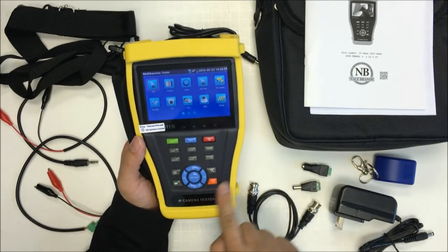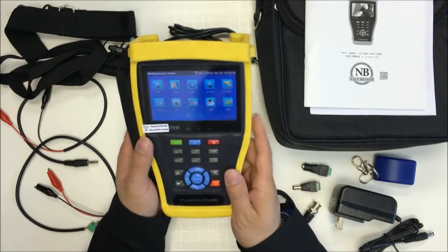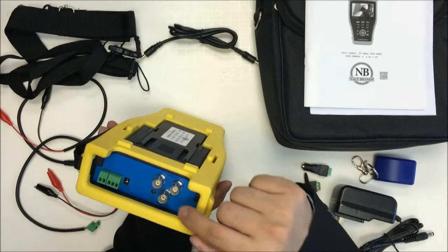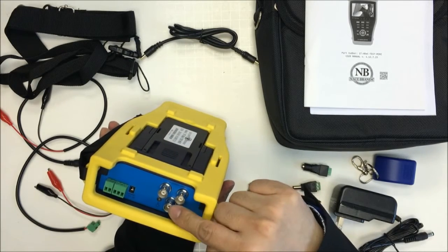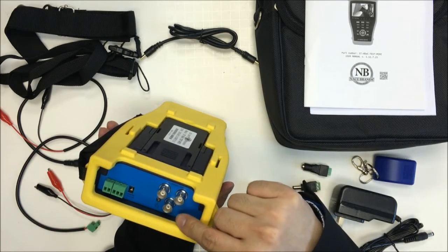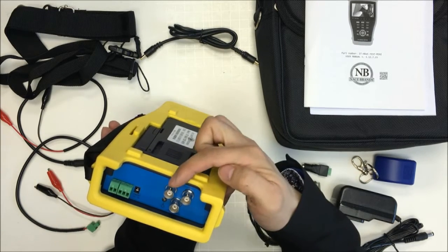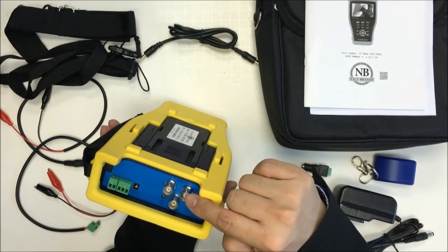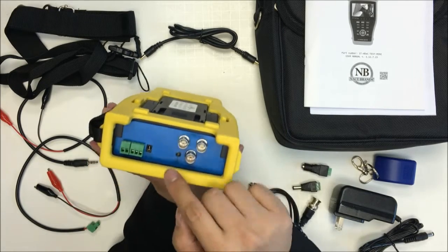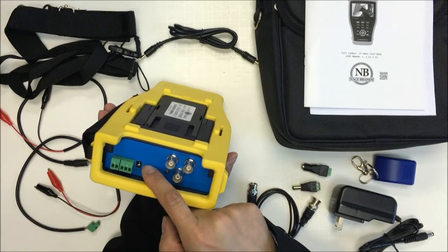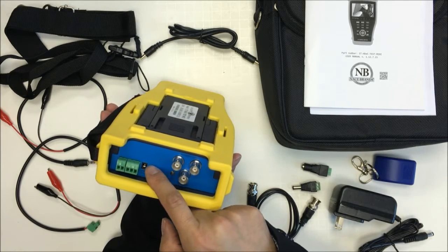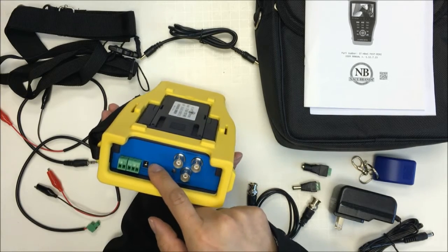There's some buttons to control the menu. On the top we have the BNC input which is for HD camera, CVI camera, TVI camera and analog camera input. This is a BNC output. This is a DC 12 volt 2 amp power output. You can give the power to the camera.